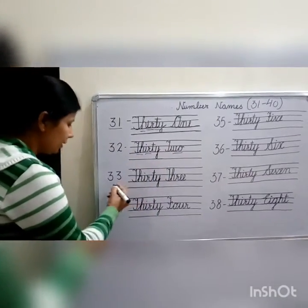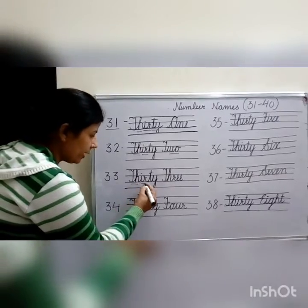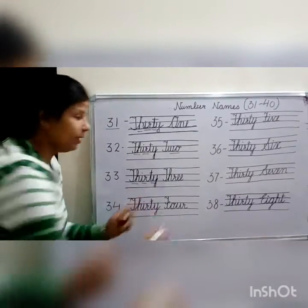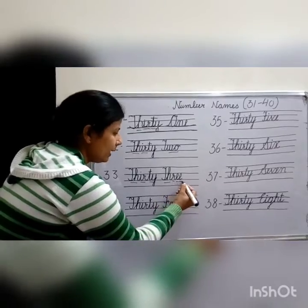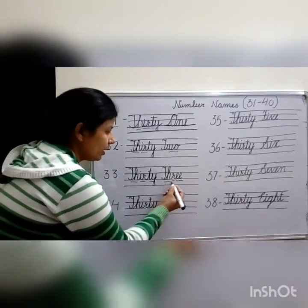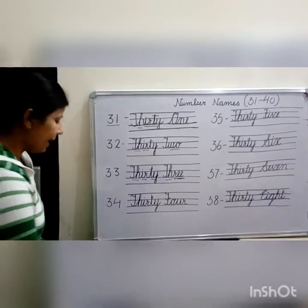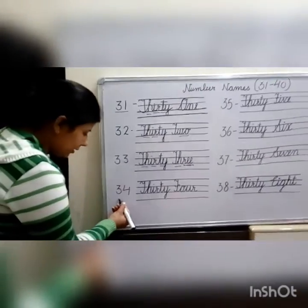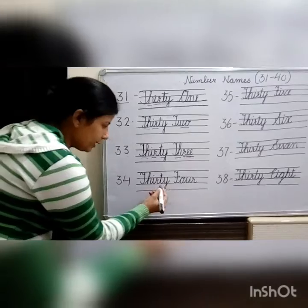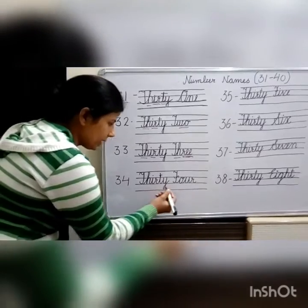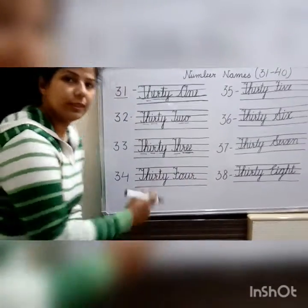Next, 33. Thirty. T-H-R-E-E — 3. Thirty-three. Next, 34. Thirty. F-O-U-R — 4. Thirty-four.